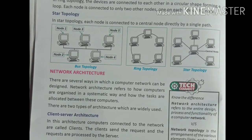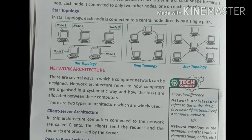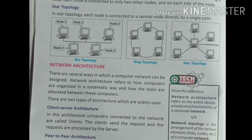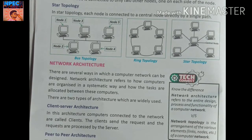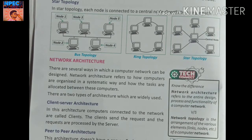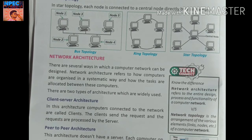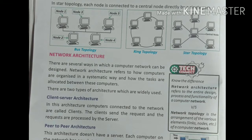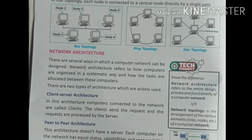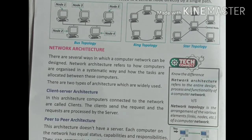Network Architecture: there are several ways in which a computer network can be designed. Network architecture refers to how computers are organized in a systematic way and how tasks are allocated between computers. There are two types of architecture widely used. The first is Client-Server Architecture, where clients are connected to the server.